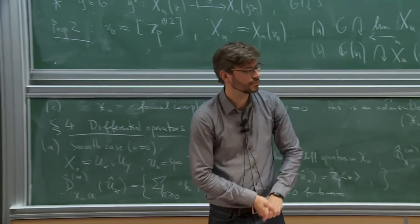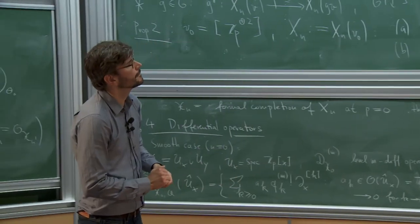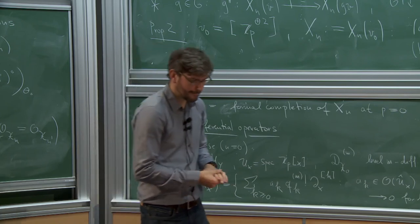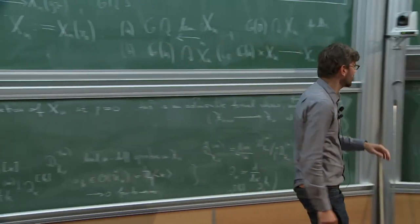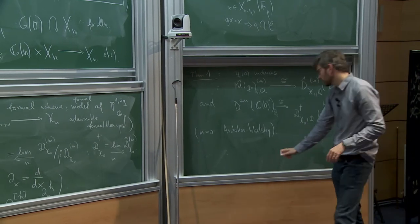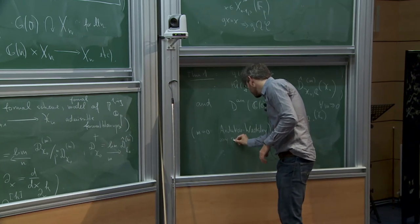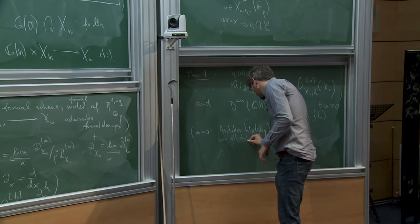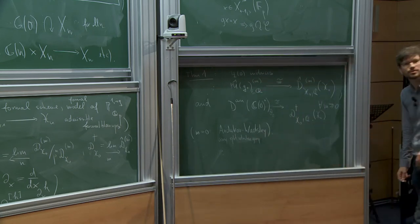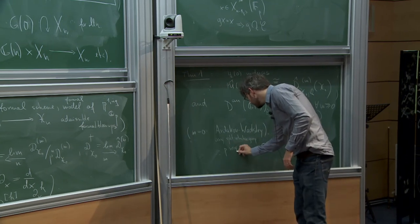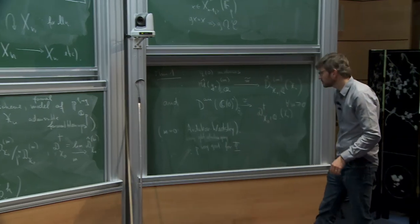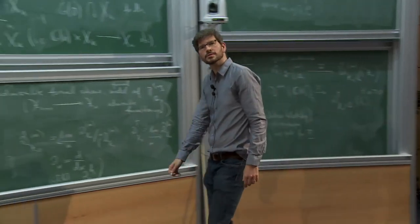Question: Is the result for GL2 or SL2? Answer: It descends to the SL2 case, GL2 case, SL2 case, yeah. The result of Ardakov-Wadsley is more general — they prove it only for M = 0 but for any reductive split group, under the assumption that the prime number is good for the root system, or very good for the root system. But for GL2, any prime number is good.